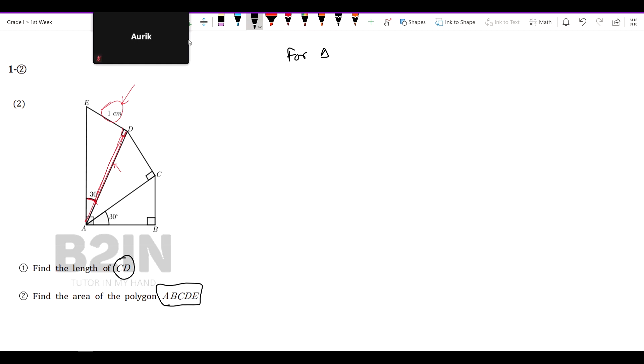So for triangle ADE, we have to write tan 30 degrees equal to 1cm by ADE X, by x1. So 1cm by x1, which implies x1 equal to 1 by tan 30.